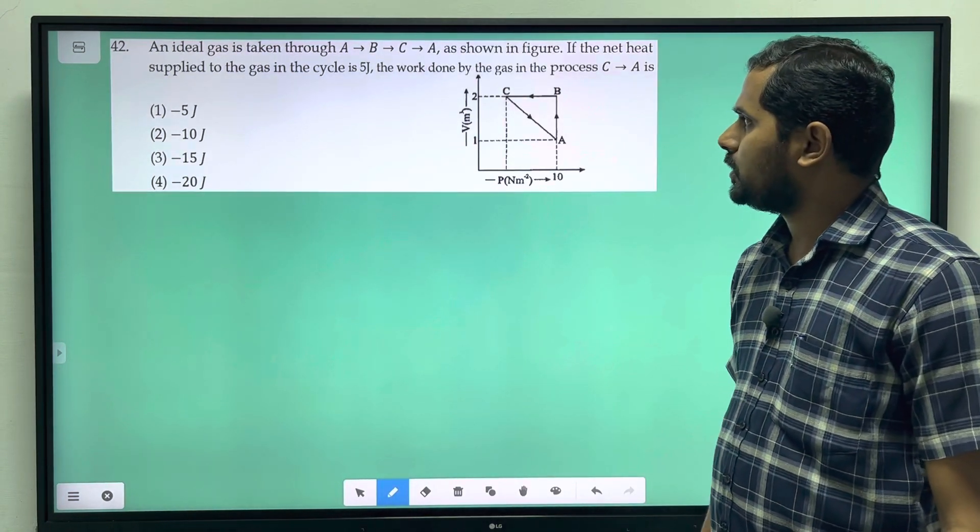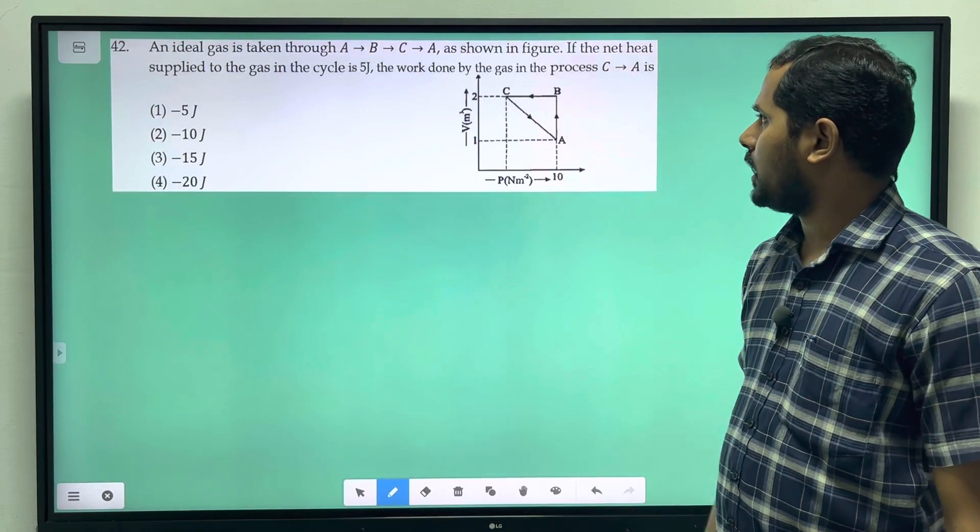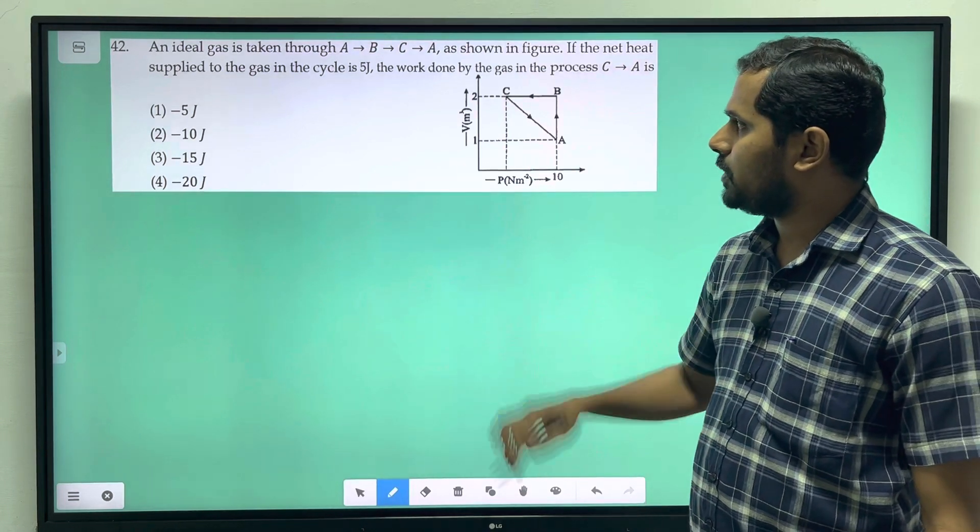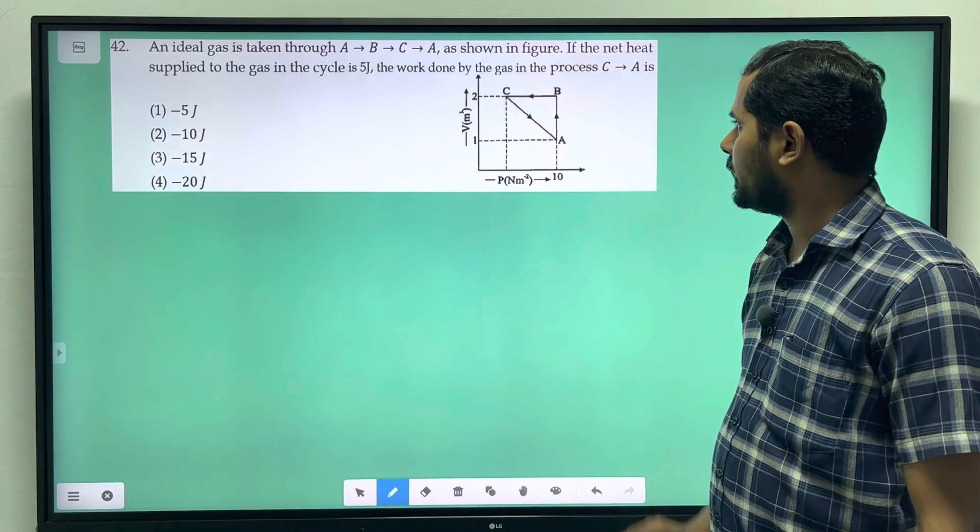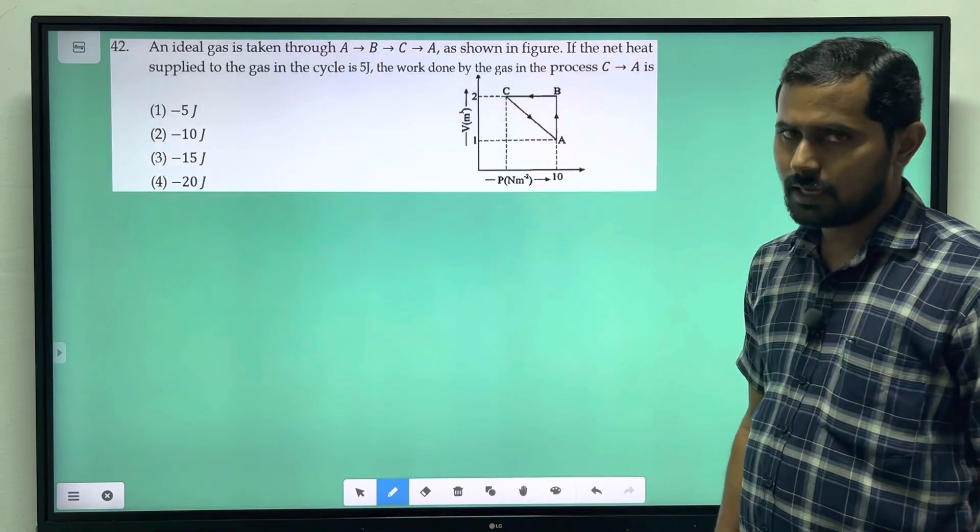An ideal gas is taken through A, B, C, A as shown in figure. If the net heat supplied to the gas in the cycle is 5 joule, the work done by the gas in the process C, A is...